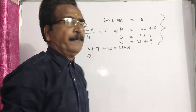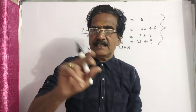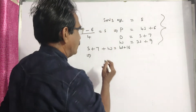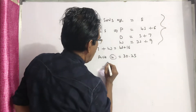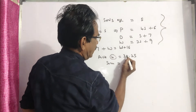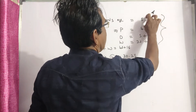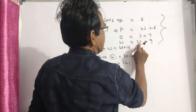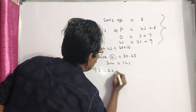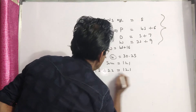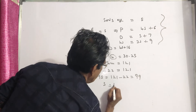Now we have the ages of all four persons in terms of s. The average age of the entire family of four members is equal to 30.25. Their sum is equal to 4 times 30.25, that is 121. The sum of the four ages: s plus (4s plus 6) plus (s plus 7) plus (3s plus 9) equals 9s plus 22 equals 121. This implies 9s equals 99, so s equals 11.